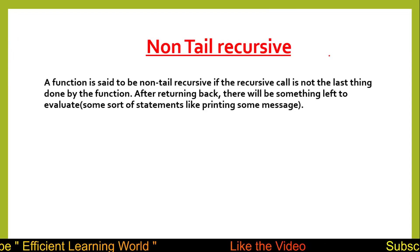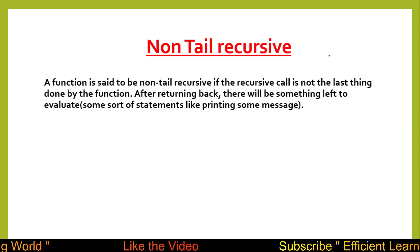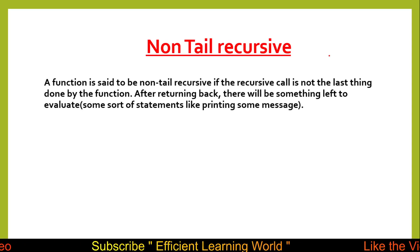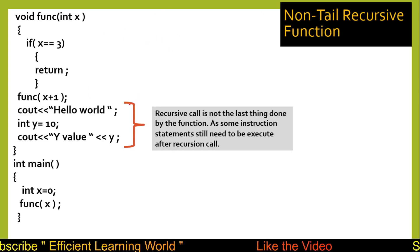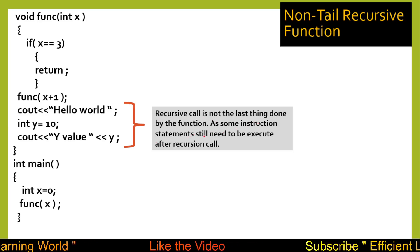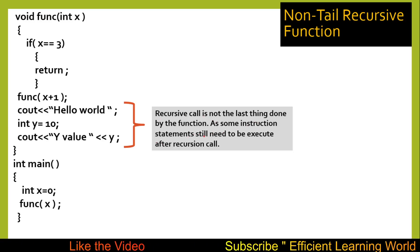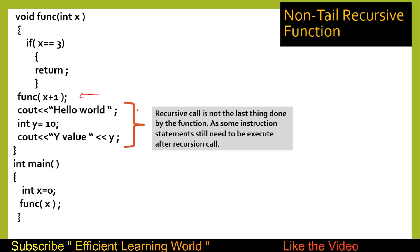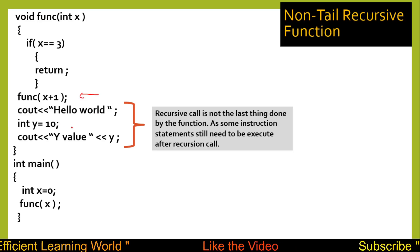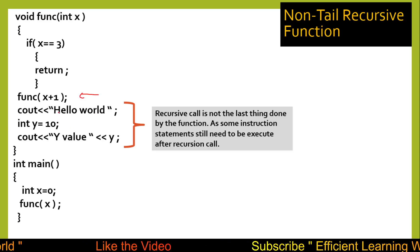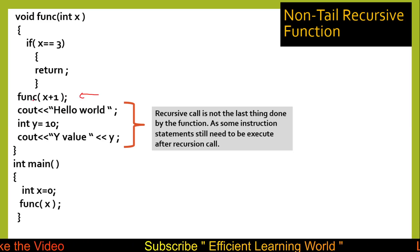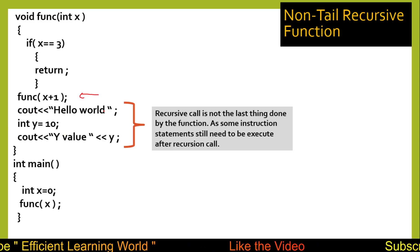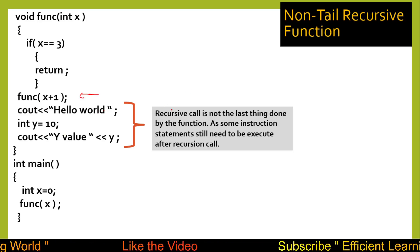A function is said to be non-tail recursive if the recursive call is not the last thing done by the function. After returning back there will be something left to evaluate — some statements like printing a message. In the function body, after the last recursive call there are still some instructions to be executed, such as printing a message to the console, declaring or initializing a variable, or returning a value. This is the difference between tail recursive and non-tail recursive functions.